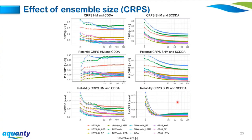For CRPS decomposition in the Dünnern catchment: potential CRPS represents the CRPS achievable with perfectly reliable simulations and is sensitive to sharpness; reliability CRPS is the reliability component; overall CRPS is their sum. For ensemble models, reliability is a significant portion of the overall CRPS. For stochastic models, potential CRPS contributes greatly to overall CRPS with minimal contribution from reliability CRPS — reliability CRPS values are between 0 and 0.05 — suggesting the stochastic framework converts ensemble models into more reliable models at the cost of simulation sharpness.